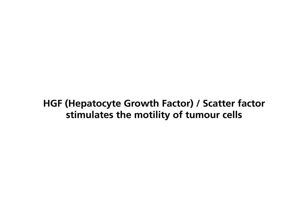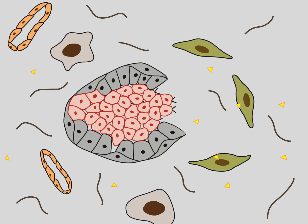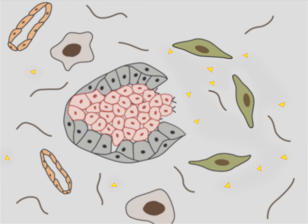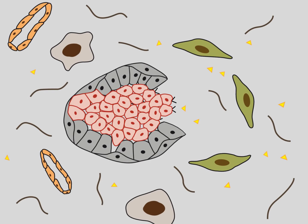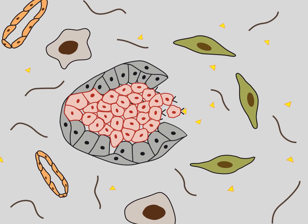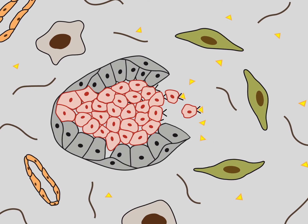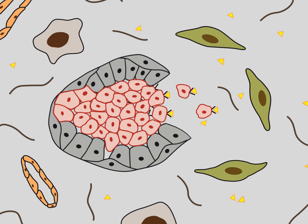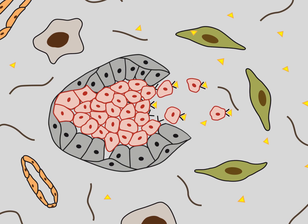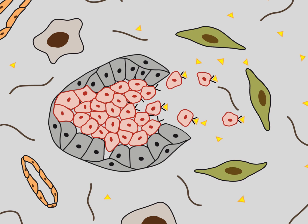HGF, hepatocyte growth factor scatter factor, stimulates the motility of tumor cells. Tumor-associated fibroblasts can affect the behavior of tumor cells. The fibroblasts may produce scatter factor, also known as hepatocyte growth factor, or HGF. Scatter factor binds to a cell membrane receptor of tumor cells called MET. Activated MET stimulates motility and invasive growth of tumor cells.